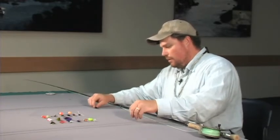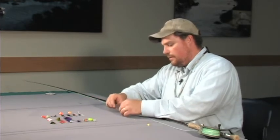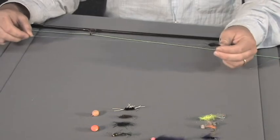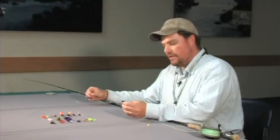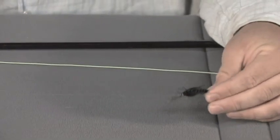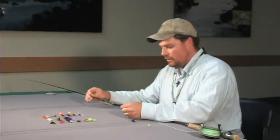We connect our primary nymph to the fly line using a piece of leader material. The bottom part of your leader is called the tippet, and we have about a 16 inch stretch of tippet that we connect to our leader.